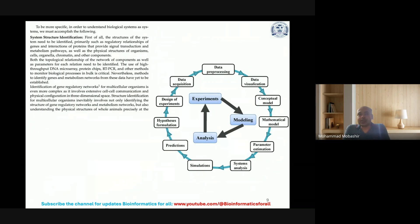In system structure identification, the structure of the system needs to be identified, such as regulatory relationships between genes, interactions of proteins that provide signal transduction, metabolic pathways, and physical structures of organisms, cells, organelles, and chromatin. Both the topological relationship of the network and the parameters for each relation have to be identified. The use of high throughput DNA microarray, NGS, protein chips, RT-PCR, and other methods to monitor biological processes in bulk is crucial.